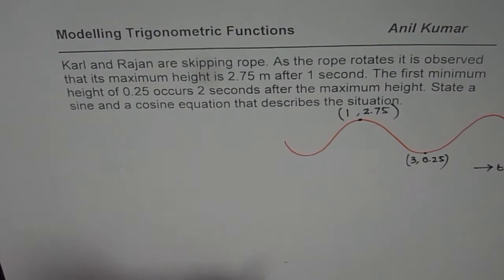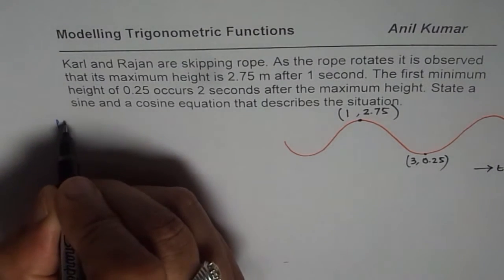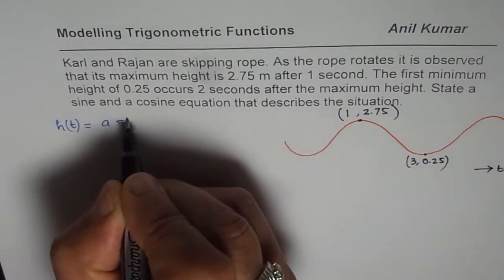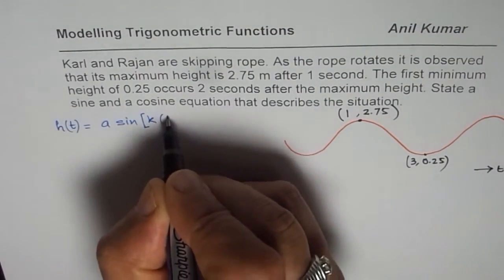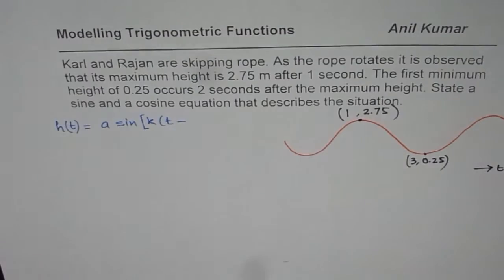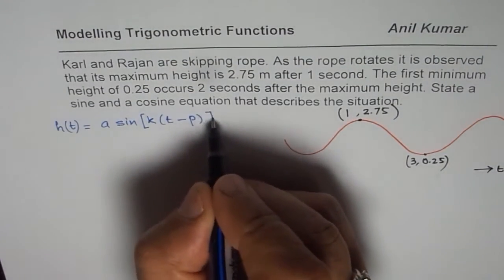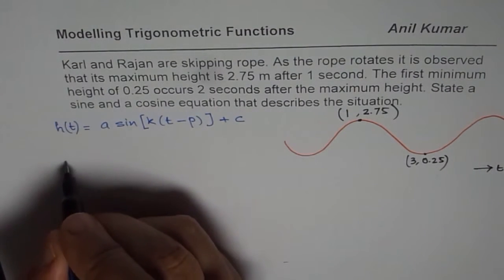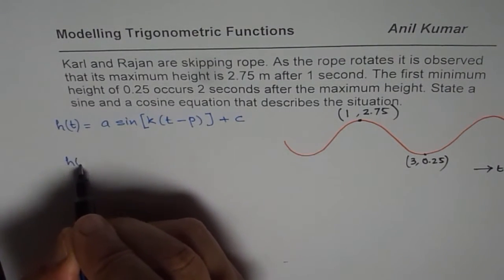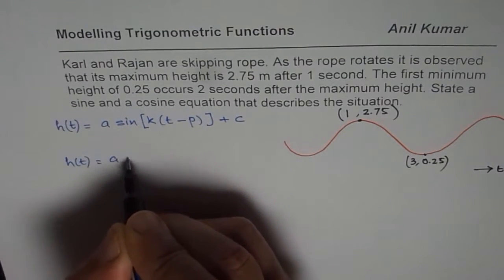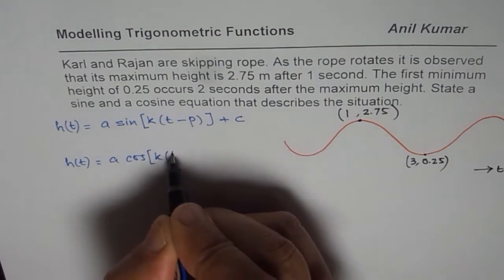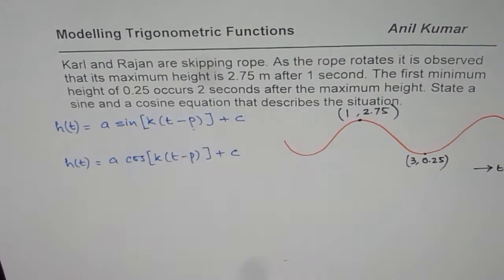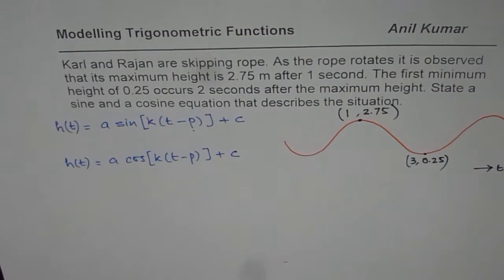What I will do is write down a sine function first. So we say height with respect to time equals A times sine of k times t minus phase shift p plus c. That is my sine function. I will also write cosine function, the same thing but this time with cos. Both equations will be exactly the same except for the phase shift part.